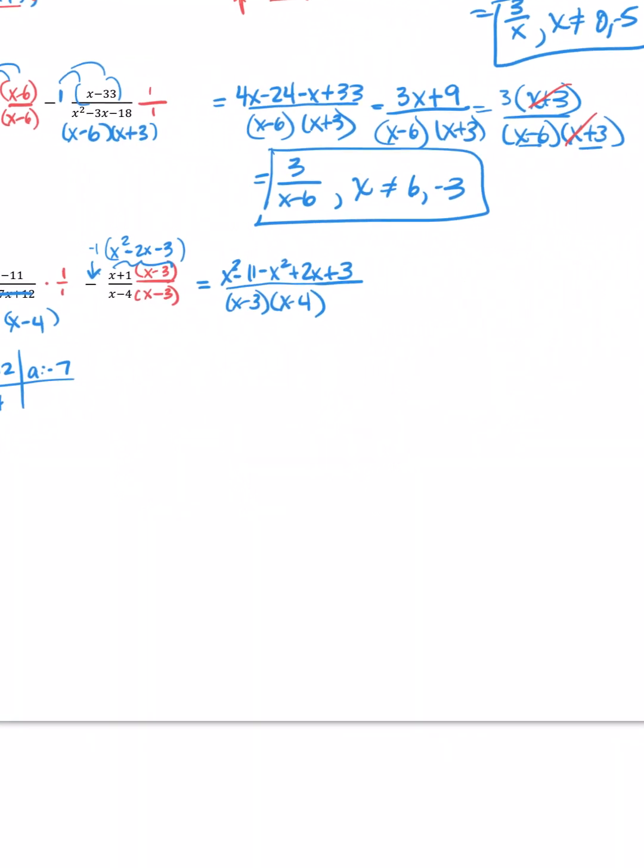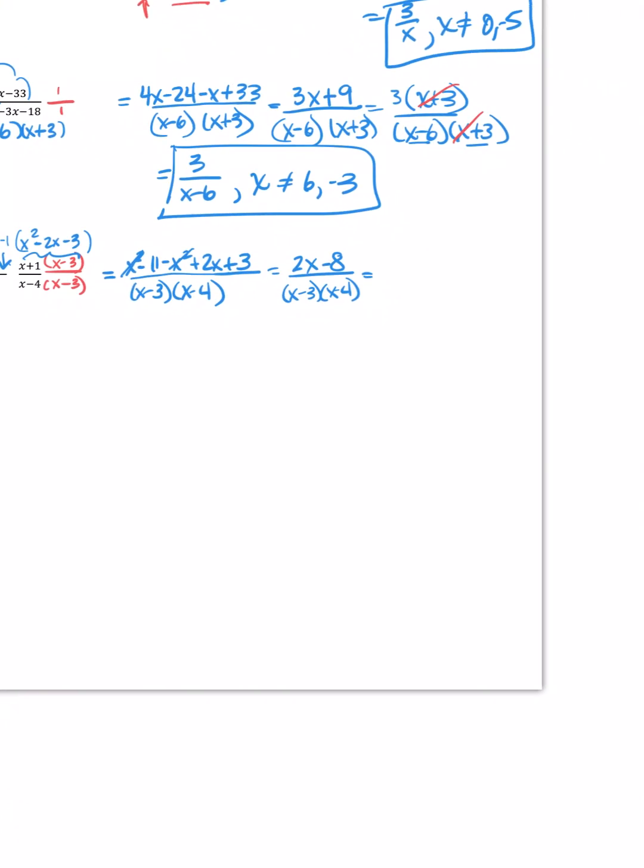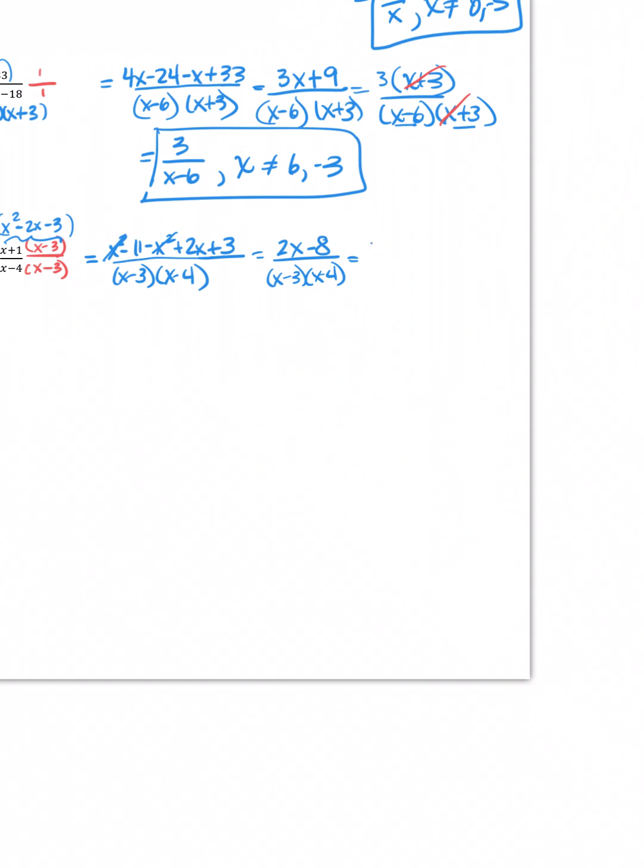Let's combine like terms. x squared minus x squared. That will leave me with a 2x. Negative 11 plus 3 is negative 8. And then, I'll have x minus 3x minus 4 on the bottom. Again, do you see the GCF that needs to come out on the top? Hopefully, you do. If we take out a 2, we'll have x minus 4. And then, there's more reducing that we can do. That leaves me with 2 over x minus 3.